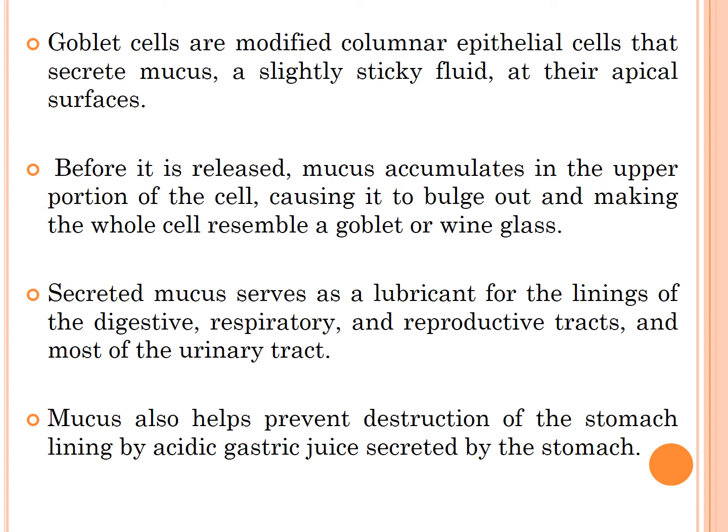Goblet cells are modified columnar epithelial cells that secrete mucus. Mucus is a slightly sticky fluid present at the apical surface. Before it is released, mucus accumulates in the upper portion of the cell, causing it to bulge out and making the whole cell resemble a goblet or wine glass.